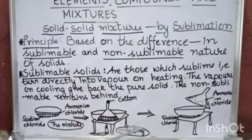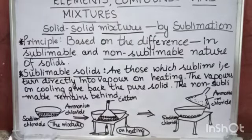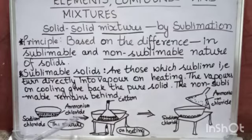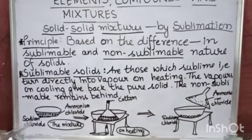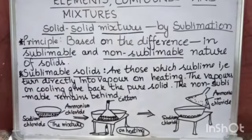Here in a dish, there is a mixture of ammonium chloride and sodium chloride. Ammonium chloride is sublimable, whereas sodium chloride is non-sublimable.